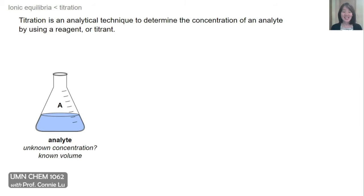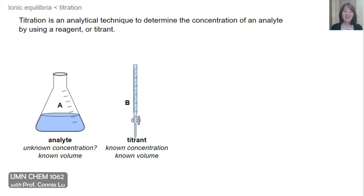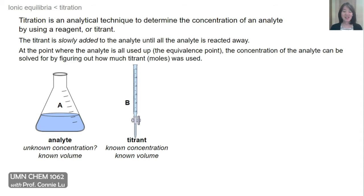Our analyte is in this Erlenmeyer flask, where we know the volume but not the concentration. And our titrant would be in this burette, where we do know the concentration and the volume. In the titration experiment, the titrant is slowly added to the analyte until all the analyte is reacted away.